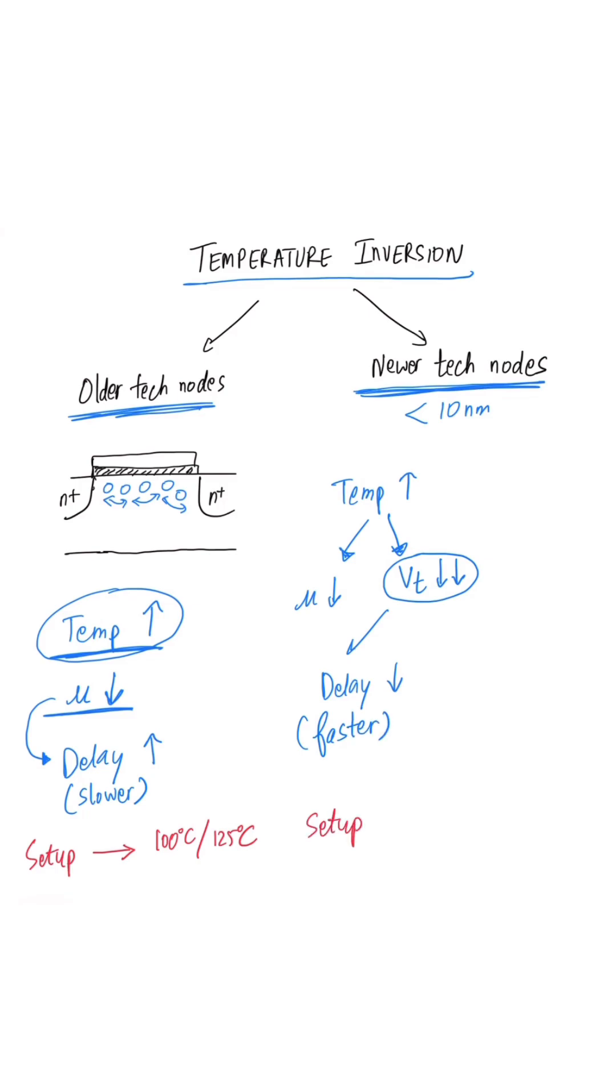So in such a case, for setup timing analysis, our worst or slowest timing corner could be at a low temperature like 0°C or -25°C, and our hold corner or the fast timing corner could be at a higher temperature like 100°C or 125°C. Note that it is still possible to have the higher temperature corner as the worst setup corner even in lower tech nodes.